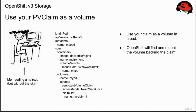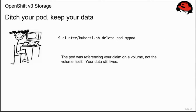When you have a claim and it is bound to a matching volume, you can use your claim as a volume in your pod. We're implementing this as another kind of volume plugin. Our plugins allow OpenShift to find the volume backed by the claim and make it available to the pod. The application developer has the same control as before with regards to access modes and how the volume is mounted, but now they're decoupled entirely from the actual volume itself. They can focus on application development while admins manage the high availability of the cluster and its data.